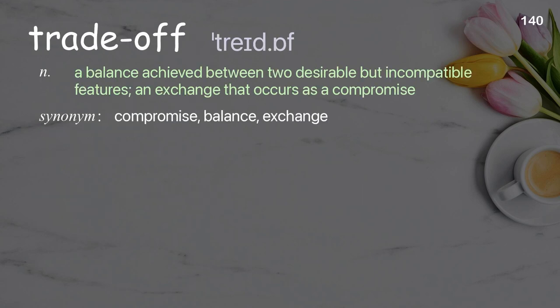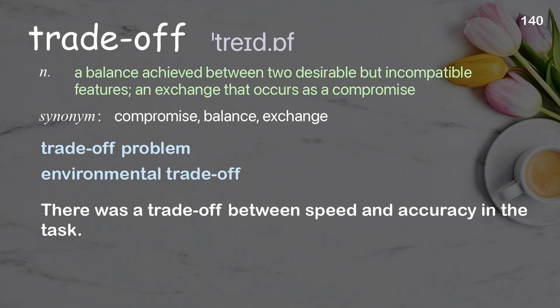Trade-off: a balance achieved between two desirable but incompatible features; an exchange that occurs as a compromise. Examples: trade-off problem, environmental trade-off. There was a trade-off between speed and accuracy in the task.